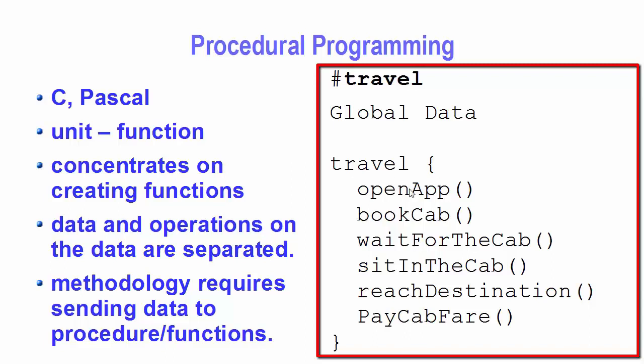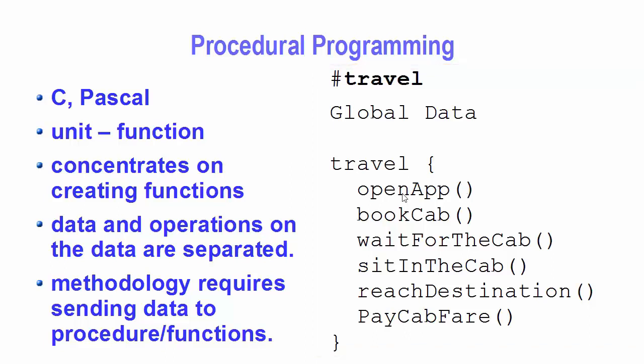These kinds of functions are passive — they cannot hold any information inside them. Once you give the data they return a result after performing some operations, but they cannot save or hold the state. So if you want to use that data somewhere else in your code, it will be very difficult using the functions of procedural programming.